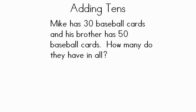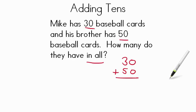Let's do a word problem to review. Mike has thirty baseball cards and his brother has fifty baseball cards. Notice how many do they have in all. We know we're adding, so we're practicing adding tens. So what's our first step? That's right. Let's draw out that we need thirty and fifty, and we're trying to find them in all. So let's vertically add them, thirty plus fifty.